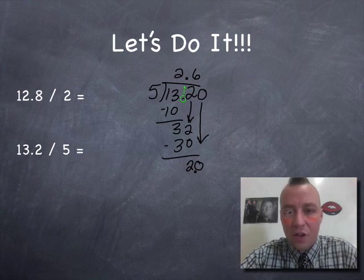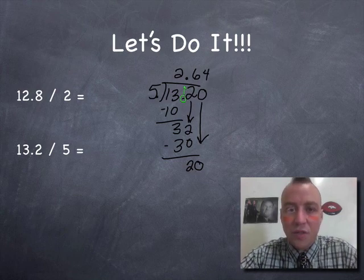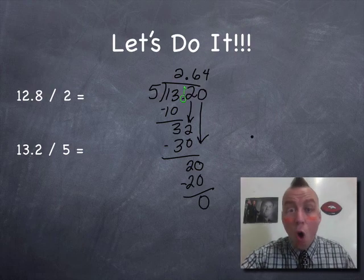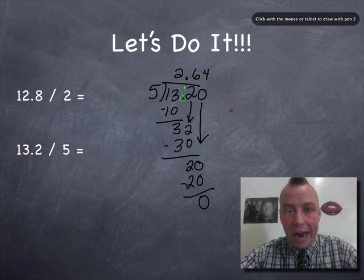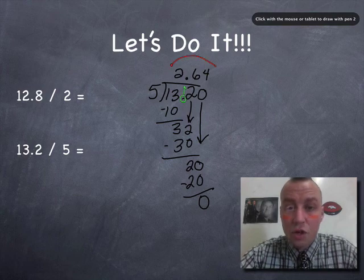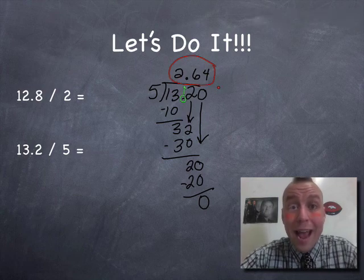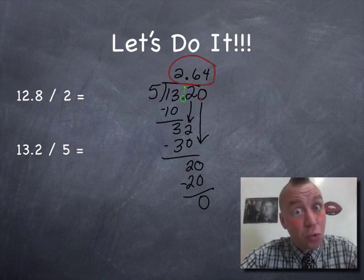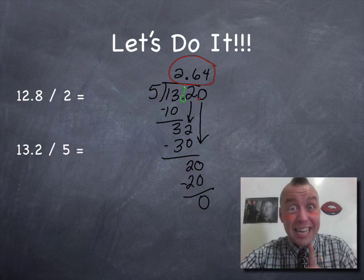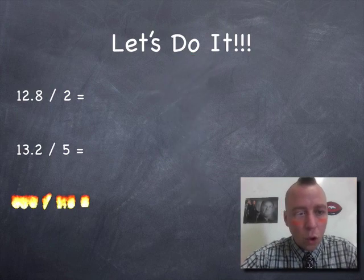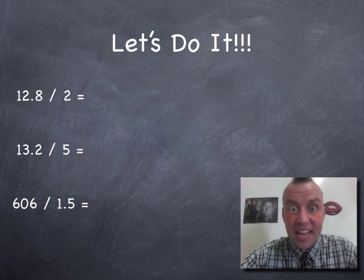We can say, how many times does 5 go into 20? It goes in 4 times because 4 times 5 equals 20. 20 minus 20 is zero. No remainder. So here is our answer. 13.2 divided by 5 is 2.64 or 2 and 64 hundredths. Now remember this adding the zeros rule. It's very important. We're going to use it again right now. So here we go.